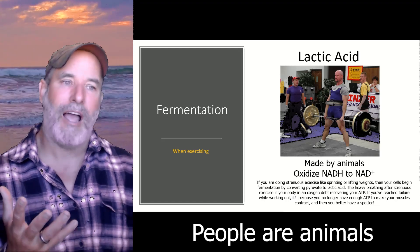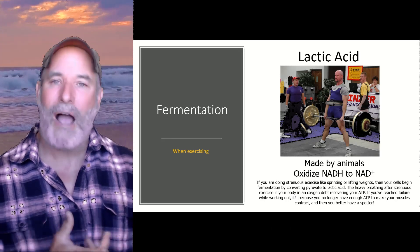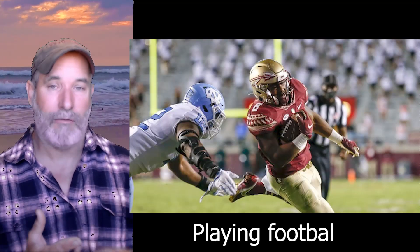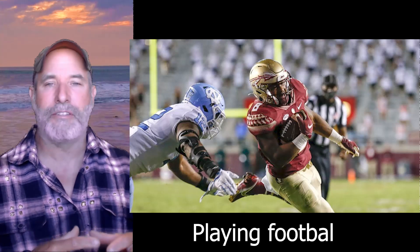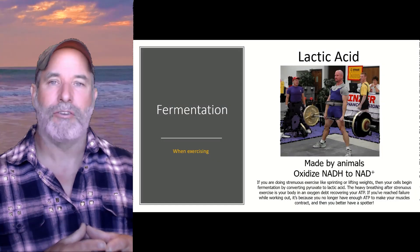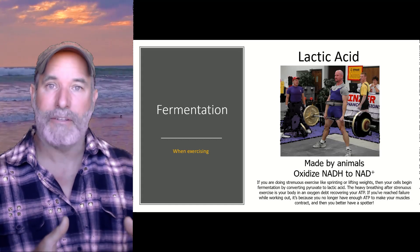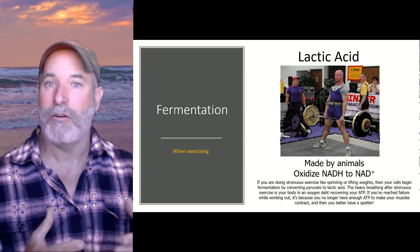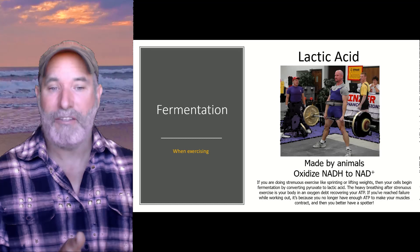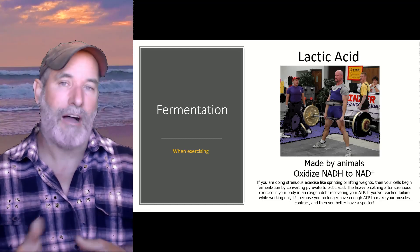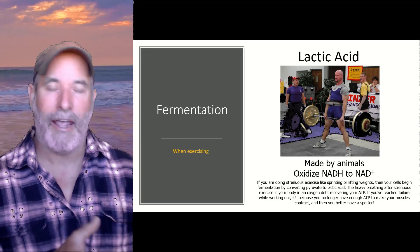So if you've ever sprinted, run up a flight of stairs — I used to power lift back in the day — any strenuous type of exercise, what happens is your body is going to quickly run out of ATP. You're going to run out of it so quickly that cellular respiration and oxidative phosphorylation can't keep up. So basically you just rely on glycolysis, and as a result of relying on glycolysis, you don't make as much ATP.